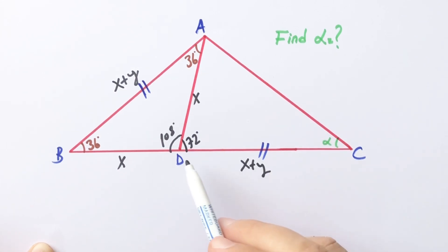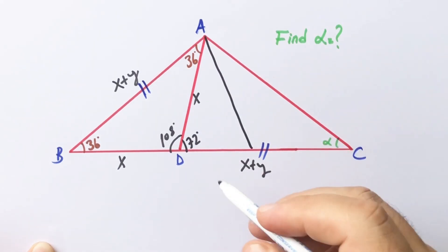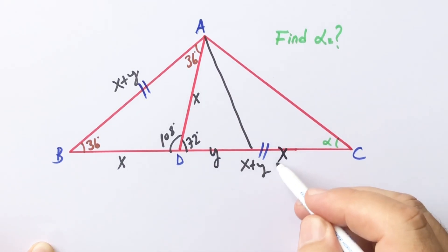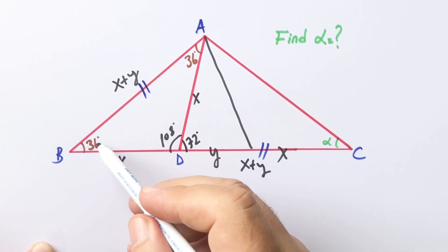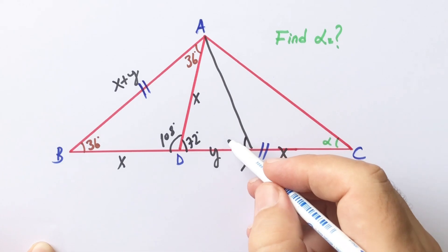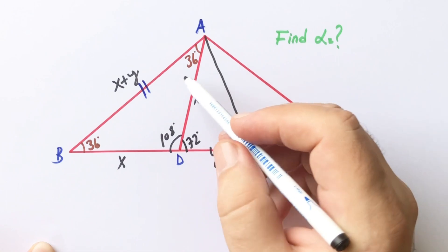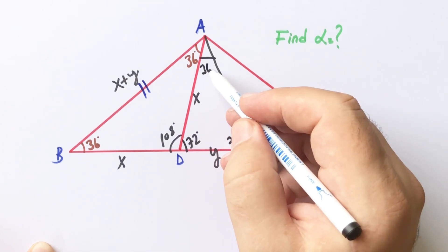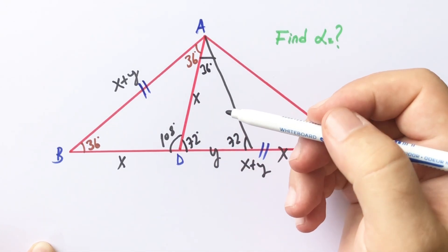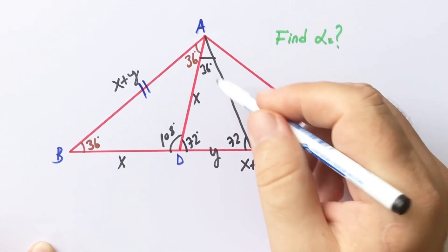If you separate this side into y and x, you'll notice that we get an isosceles triangle. So if here is 36 degrees, this angle must be 72 degrees and this angle must also be 72 degrees. Therefore 36 degrees is left here, and we get another isosceles triangle.